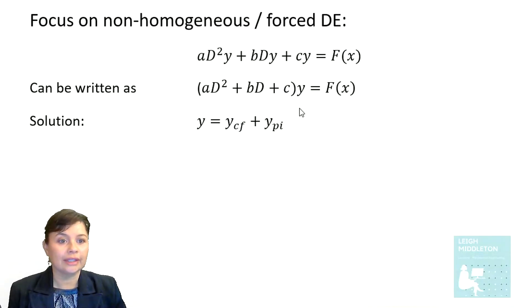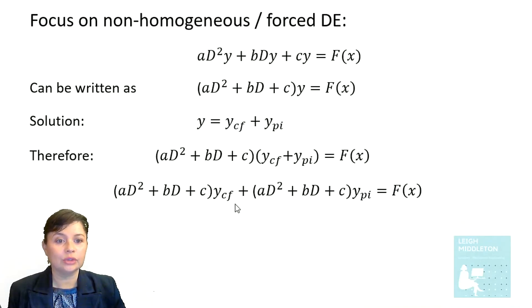Now if we take this solution and substitute it back into this equation here, you will find you get an expression that looks like this. If we rearrange the terms, you will see here, all we did was we took the first bracket, that trinomial multiplied by your complementary function, plus that trinomial multiplied by your particular integral. So you end up with two terms, equal to F(x).